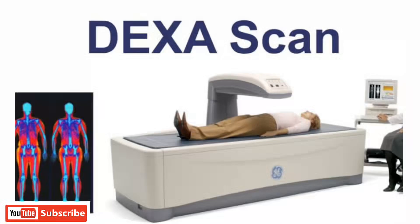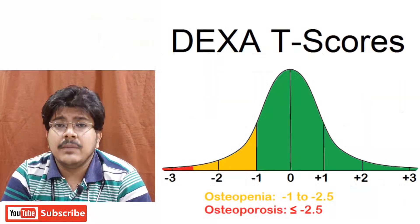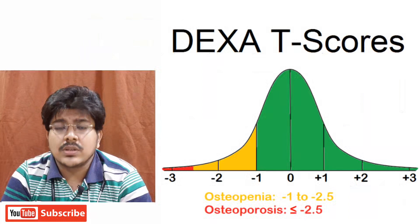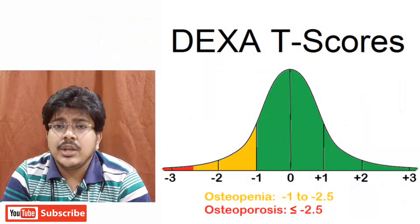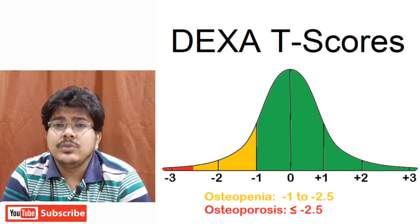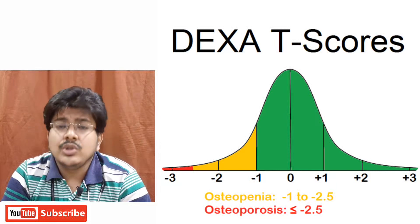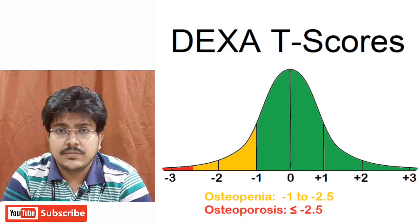Osteoporosis is measured via DEXA scan, which uses X-ray to measure the density of the bones. Interpretation is done via T-scores. When your T-score is above minus 1 you are normal; between minus 1 and minus 2.5 you are osteopenic; and below minus 2.5 you are suffering from osteoporosis.